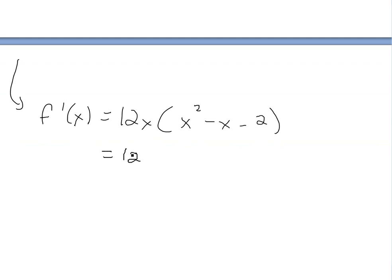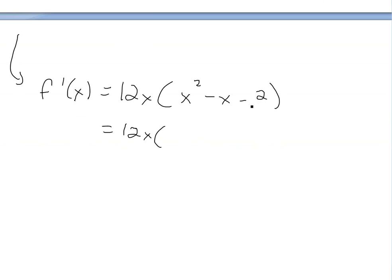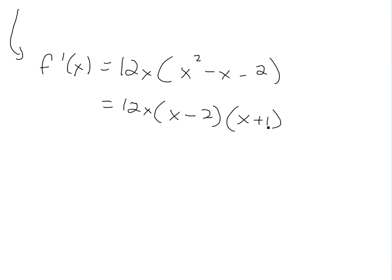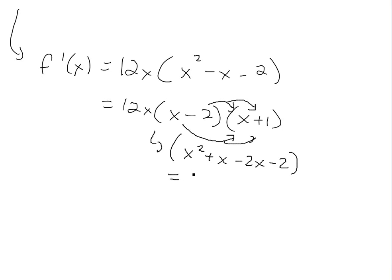This can be further factored using basic factoring. We need two numbers that multiply to give negative 2 and add to give negative 1. That gives us (x minus 2) and (x plus 1), since negative 2 times 1 is negative 2 and they add up to negative 1. Expanding to double-check: x squared plus x, then adding negative 2x minus 2, gives x squared minus x minus 2 — that's correct. You can find more on factoring in the related video links below.